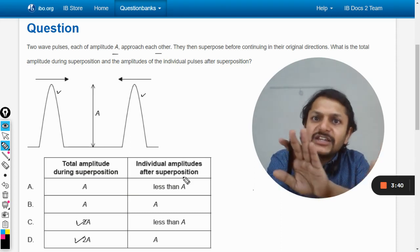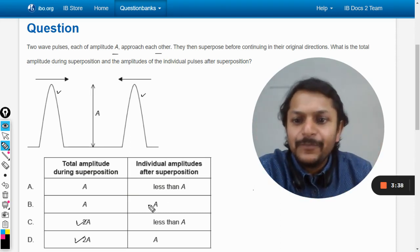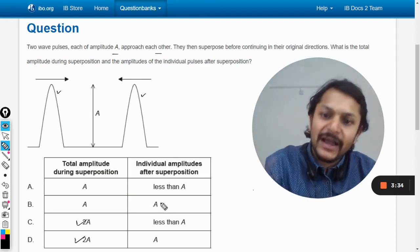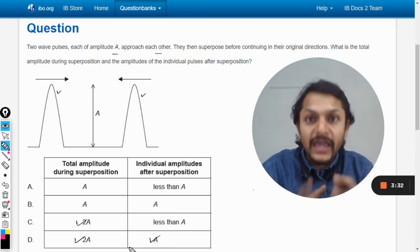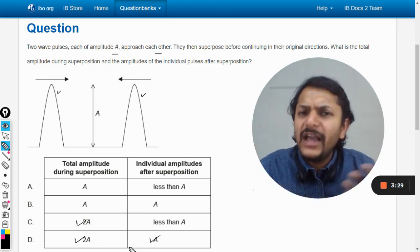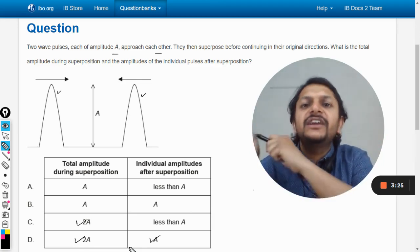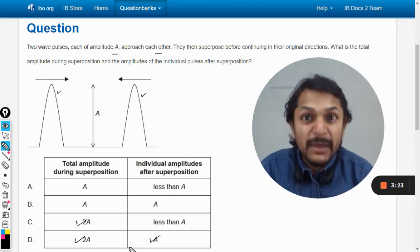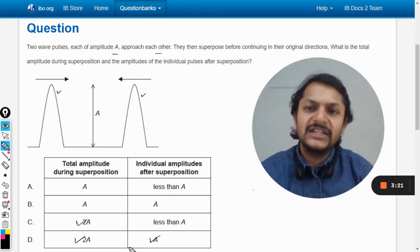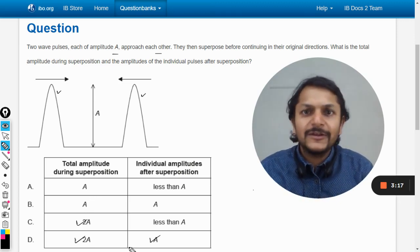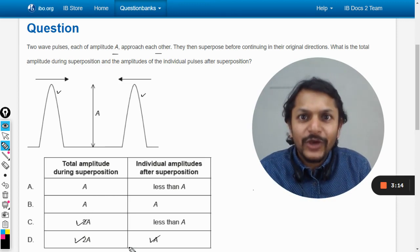The amplitude becomes back again, it becomes A back again. So the amplitude will be A and they would be going as if nothing happened. Like one wave which was moving towards right, it will keep on moving towards right with the same amplitude, with the same velocity. Everything will be the same and there is no difference at all. It would be like just nothing happened.